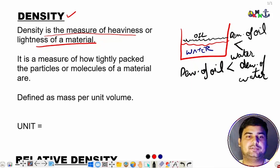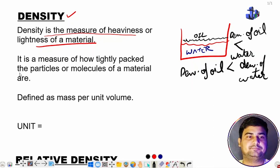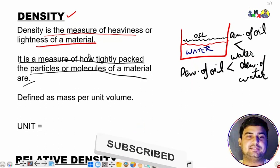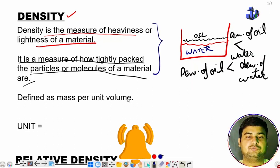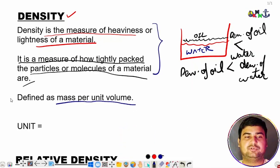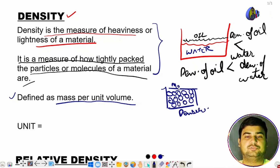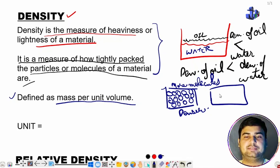This is a very important concept in stability, as we will encounter questions related to density and relative density. We can also define density as a measure of how tightly packed the particles or molecules of a material are. If molecules are tightly packed, the material is denser. If the molecules are fewer or loosely packed, the material is relatively less dense.